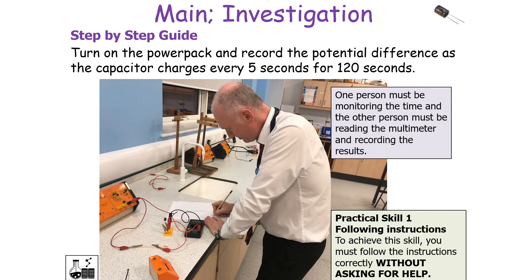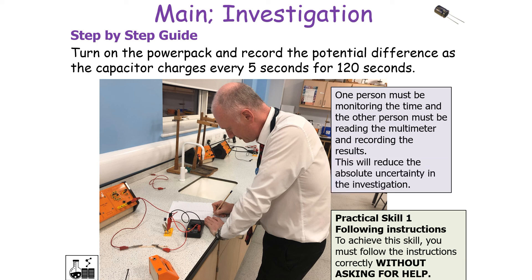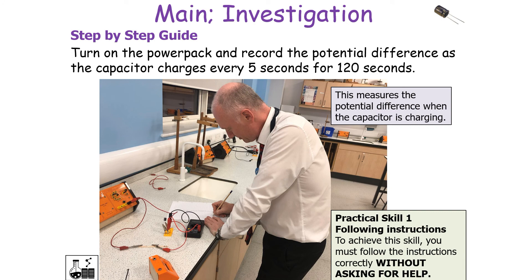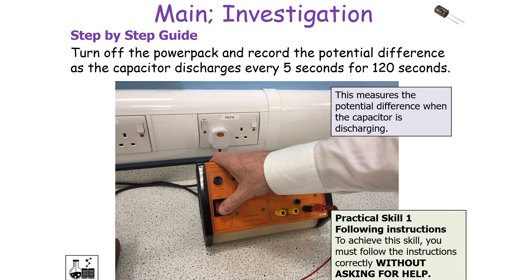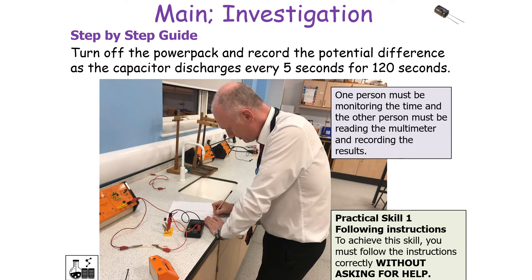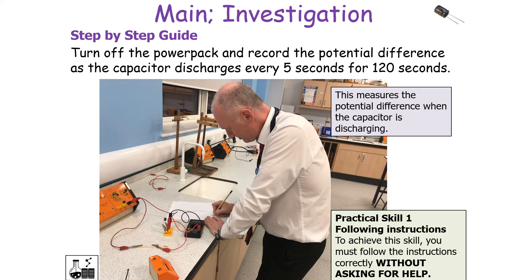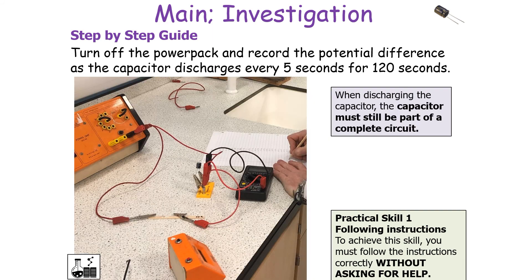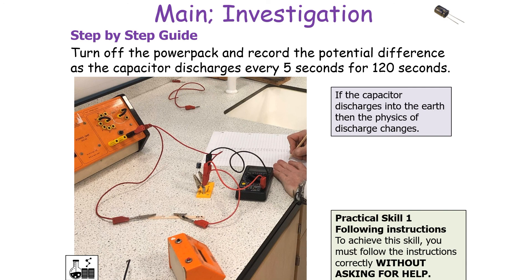Retrieve a stopwatch to measure the time. Turn on the power pack and record the potential difference as the capacitor charges every five seconds for 120 seconds. Ideally one person monitors the time while another reads the multimeter and records the results — this reduces the absolute uncertainty in the investigation. When complete, turn off the power pack and record the potential difference as the capacitor discharges every five seconds for 120 seconds. Again, one person monitors time and the other records results. Note that when discharging, the capacitor must still be part of a complete circuit — if it discharges to earth, the physics of discharge changes.